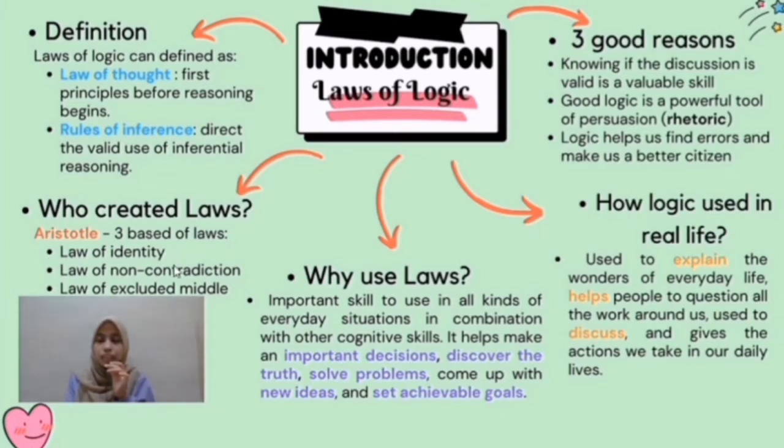Aristotle created laws with three types: first, law of identity; second, law of non-contradiction; and third, law of excluded middle.